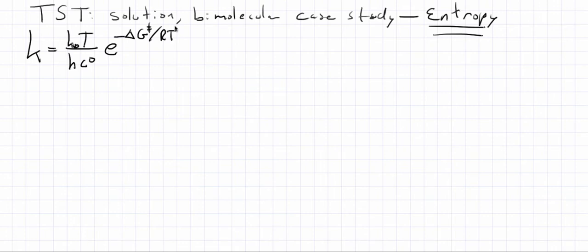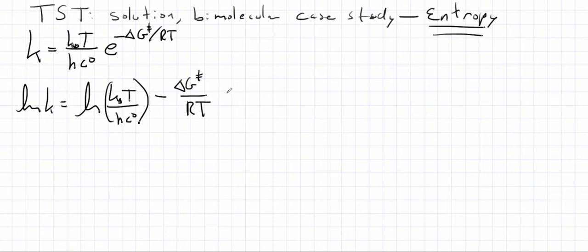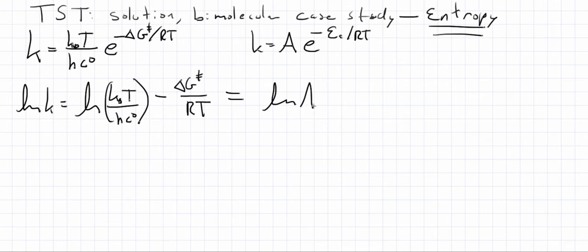We can split this into an entropy term and an enthalpy term. Taking the logarithm of k gives us the logarithm of kT over hc, minus delta G double dagger over RT. We can equate that to the Arrhenius expression: if k equals the Arrhenius pre-exponential factor times e to the minus Ea over RT, we get the log of the pre-exponential factor minus Ea over RT.